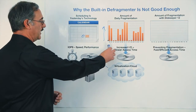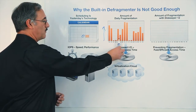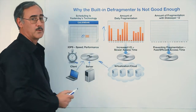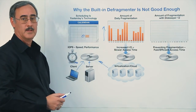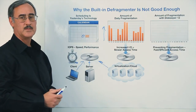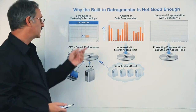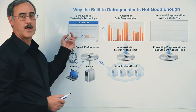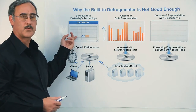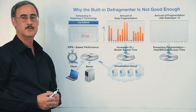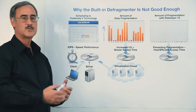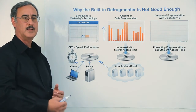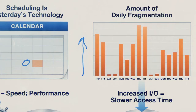So with each passing day, you're incurring more and more I.O. traffic. As a result, trying to fix it on a Wednesday — but if I'm working on a project, let's say it's Tuesday afternoon, how is running the built-in defrag Wednesday at one o'clock in the morning really going to address and fix my particular problem?